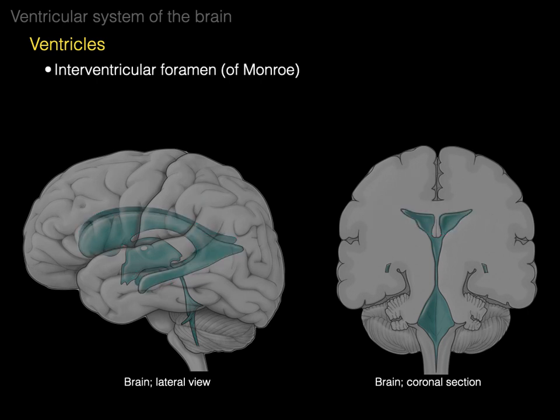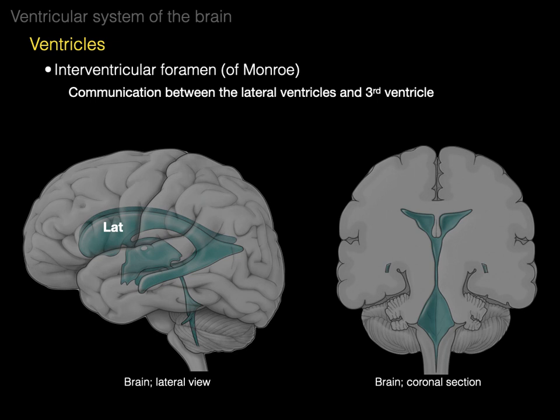Then there's the interventricular foramen of Monroe, which is the communication between the lateral ventricles and the third ventricle. There's the lateral ventricle, and there's the interventricular foramen going into the third ventricle. In the coronal section, there are our two lateral ventricles, and the paired interventricular foramina going into the third ventricle.